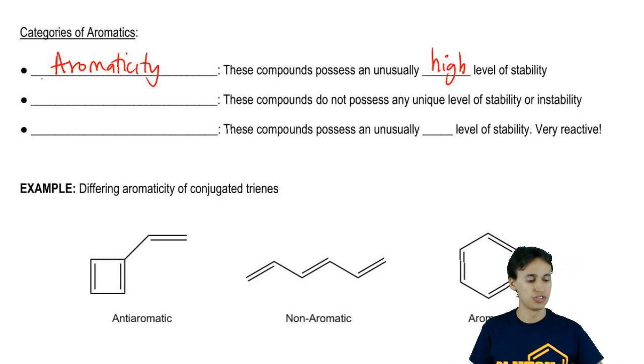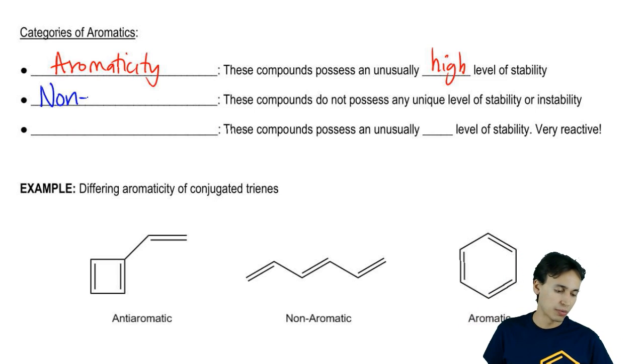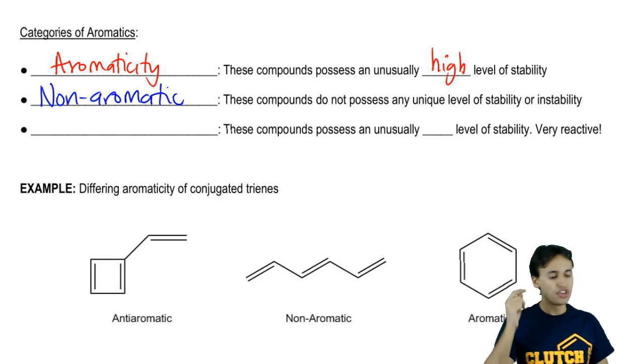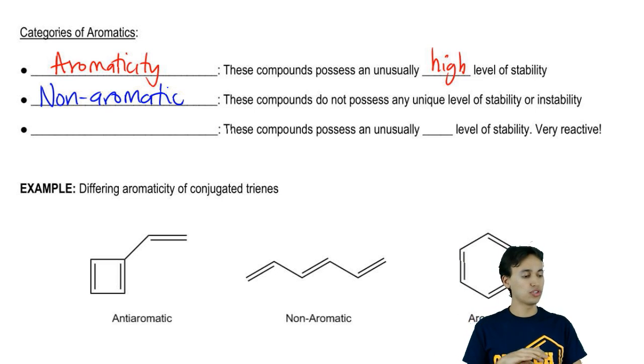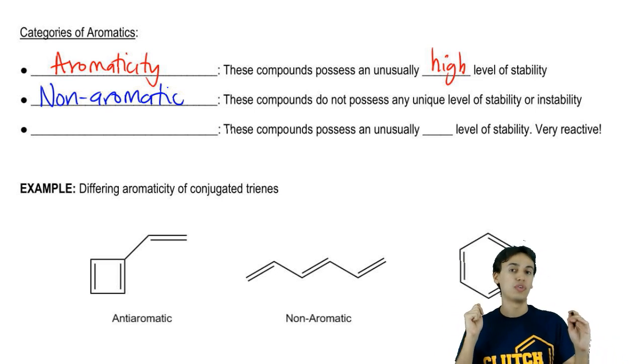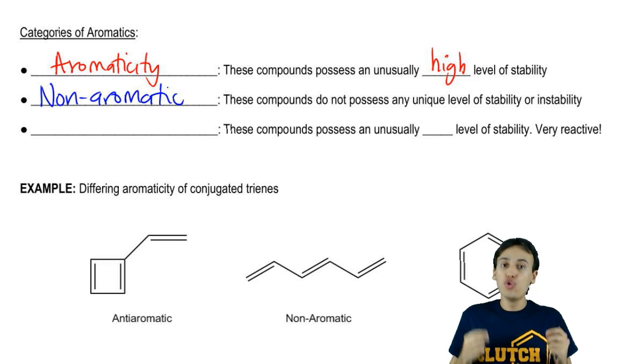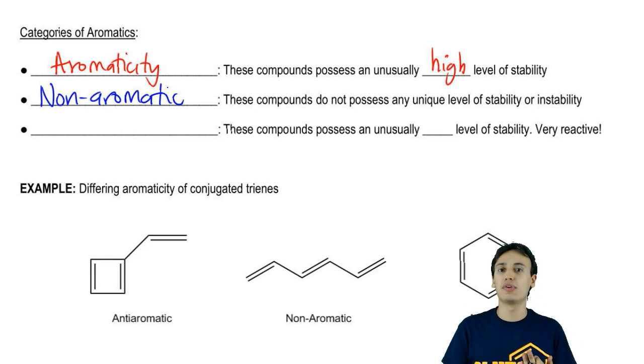Now there's another concept called nonaromatic. So we have aromatic and we have nonaromatic. Nonaromatic compounds are compounds that don't display any unique level of stability or instability. Basically, nonaromatic compounds are normal molecules, the kinds of molecules that we've discussed in every chapter previous to this one. So if you think about any molecule that we've reacted with in the past, that would be nonaromatic. It would just mean that it's normal.